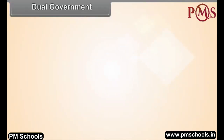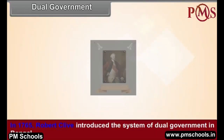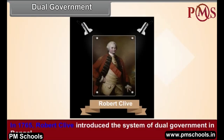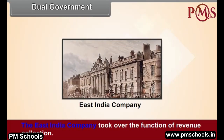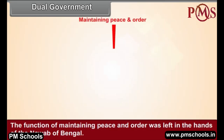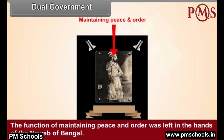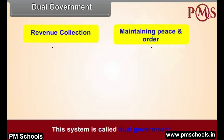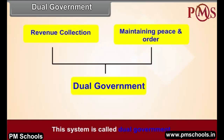In 1765, Robert Clive introduced the system of dual government in Bengal. The East India Company took over the function of revenue collection, while the function of maintaining peace and order was left in the hands of the Nawab of Bengal. This system is called dual government.